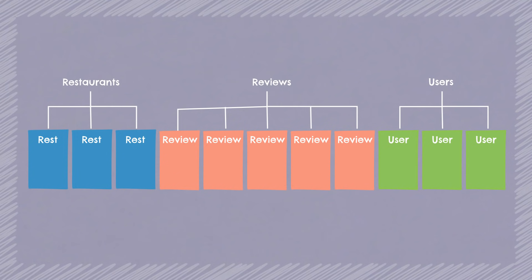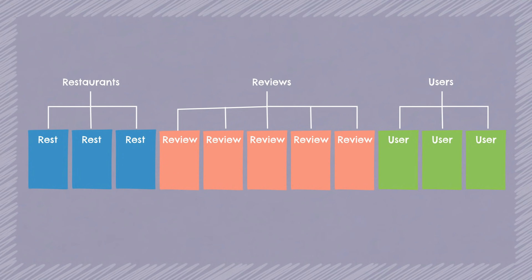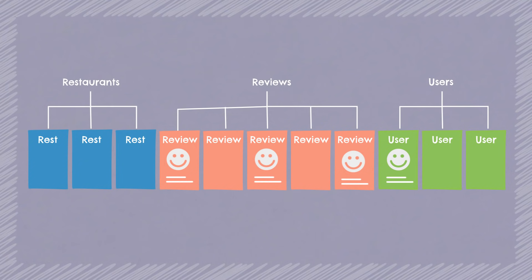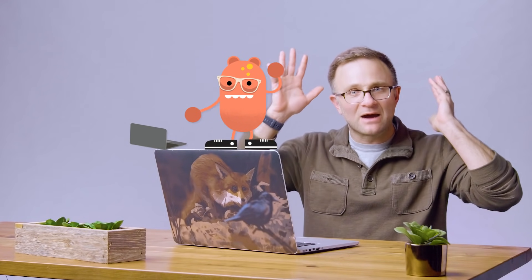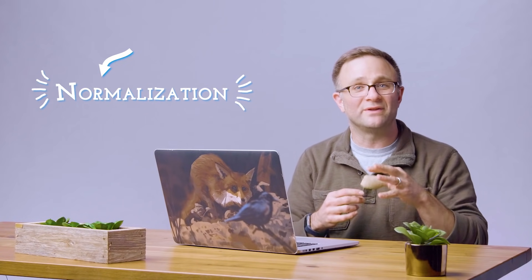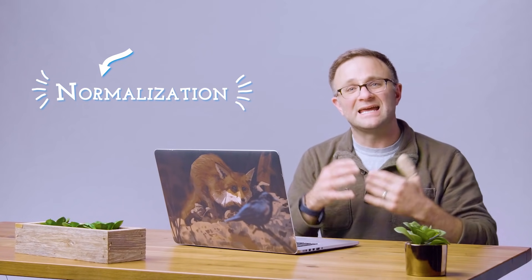So if we want to automatically include information about who wrote a particular review, we would most likely need to copy some of that user profile data — the author's name and picture — and place it into our review object. Now, if you're coming from a traditional relational database world, you're probably freaking out. You're thinking, 'oh no, you're going to have duplicate data all over your database,' which is like the worst thing ever to happen in programming since GoTo statements. People who have spent time with relational databases have been taught that data normalization — meaning every piece of data should only exist in one place — is super important.